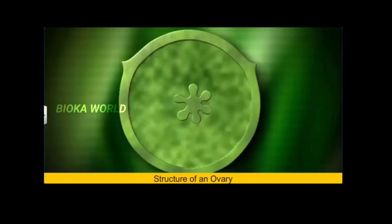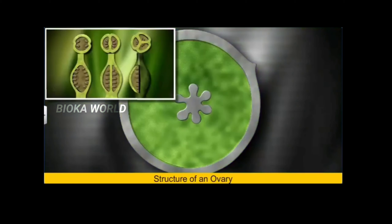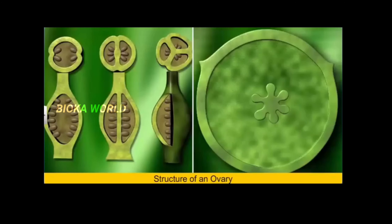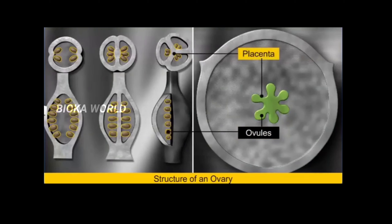Morphological studies of the ovary have revealed that it contains one or more cavities called locules or ovarian cavities that are surrounded by an ovary wall. Within the locule, you will find ovules or megasporangia that are attached to the ovary wall in a region called the placenta.